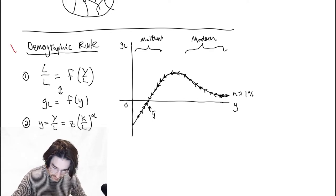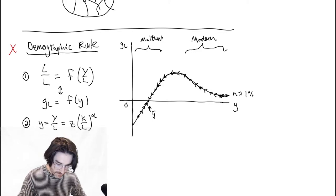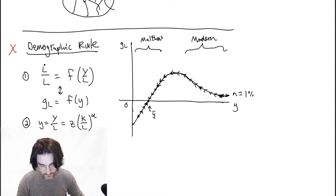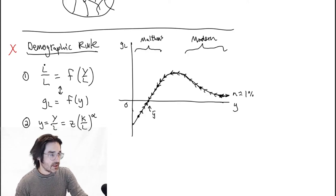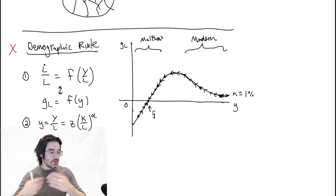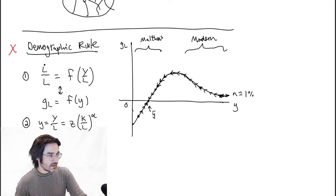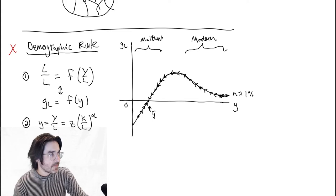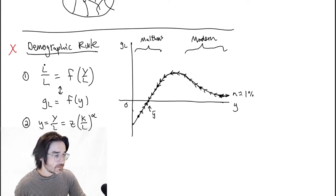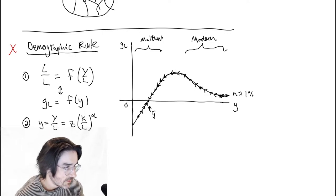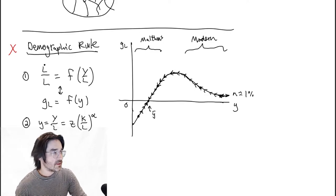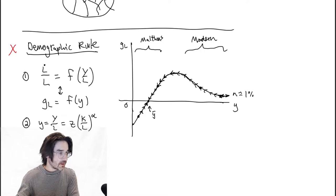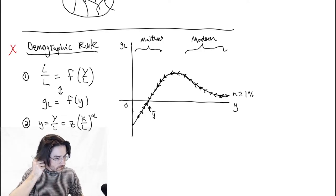So that didn't work. Demographic rule change alone doesn't work. You can combine it with a one-time increase in technology Z — you're eventually going to come back down. A one-time technology change with demographic rule change doesn't work either. But maybe the demographic rule with continual technological improvements might work — and this is where we're getting into something that looks like your homework.